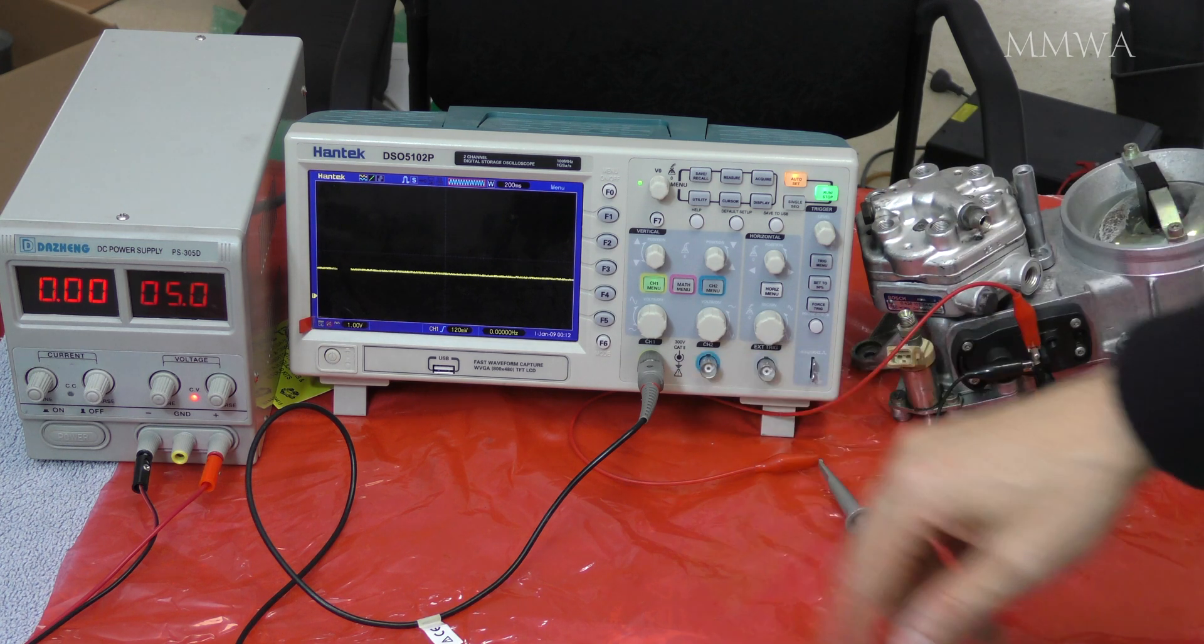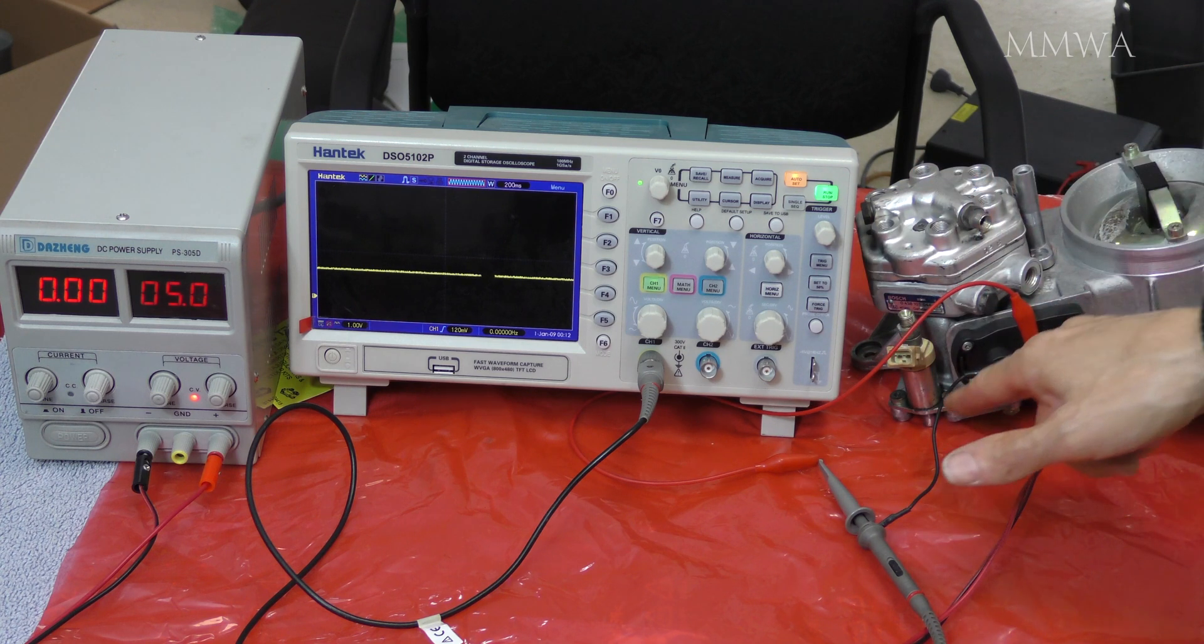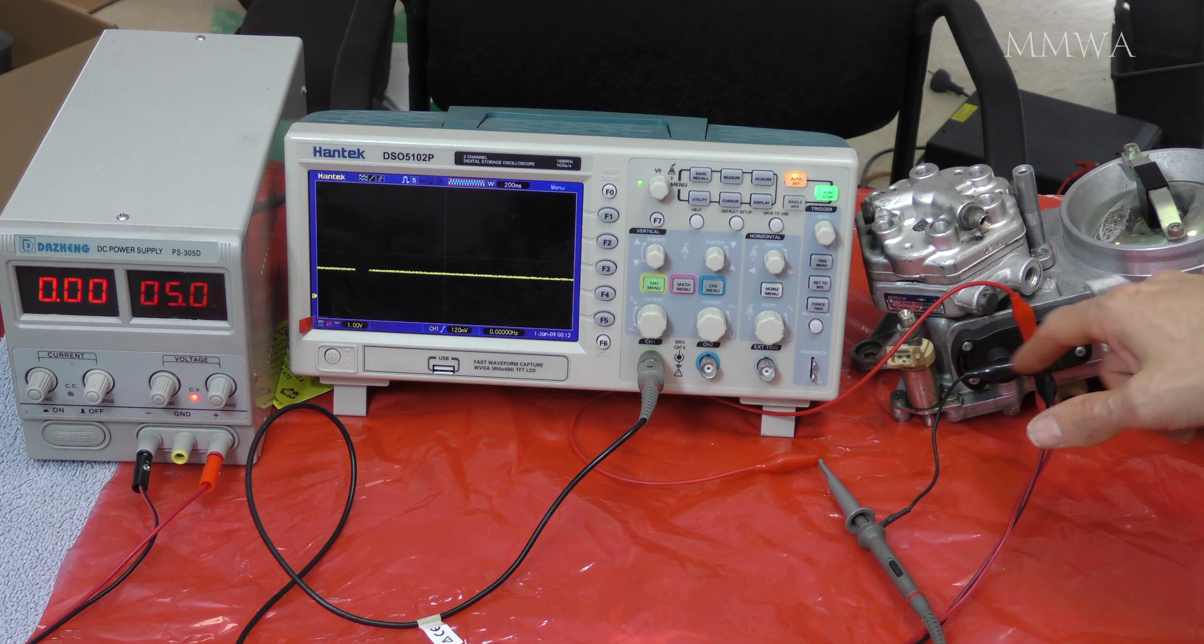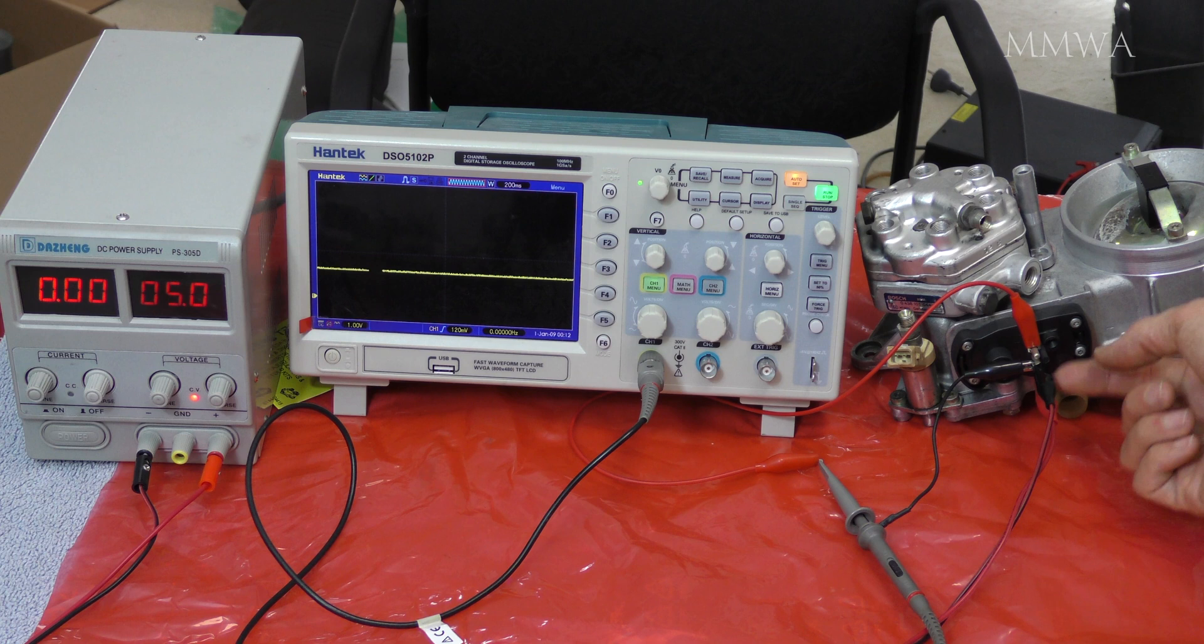I've got my scope connected to the top pin of the potentiometer. Ground is connected to the middle pin. The 5 volts from the power supply is connected to the bottom pin as is its ground connected to the middle as well.